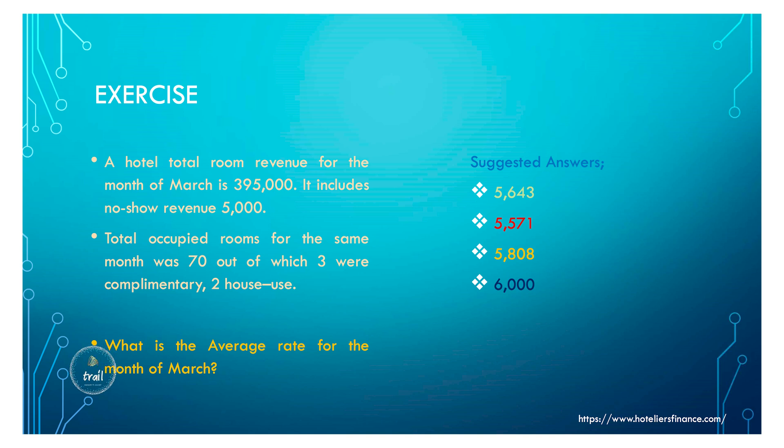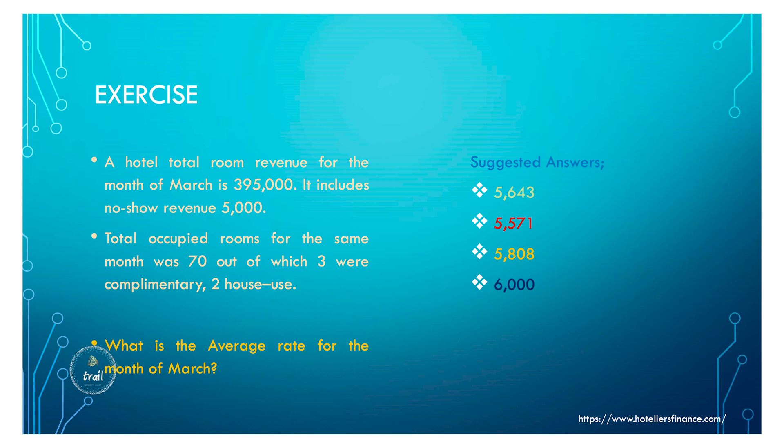Here's your exercise: a hotel's total room revenue for March is 295,000, which includes no-show revenue of 5,000. Total occupied rooms for the same month are 70, of which three were complementary and two were house use. Calculate the average rate. Suggested answers are 5,643; 5,571; 5,808; or 6,000. Write your answer in the comments or send me an email through my website hotelierfinance.com.